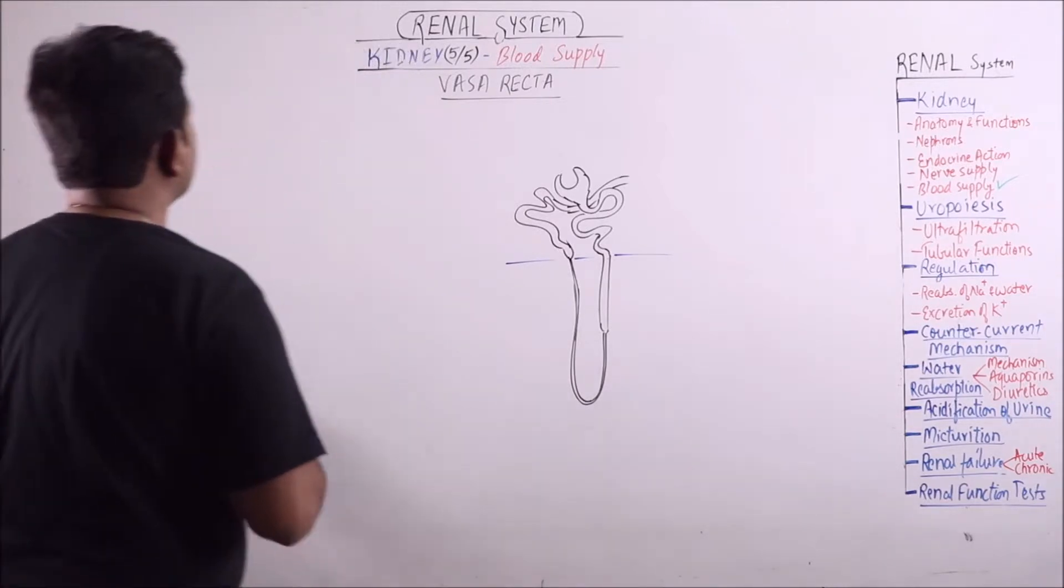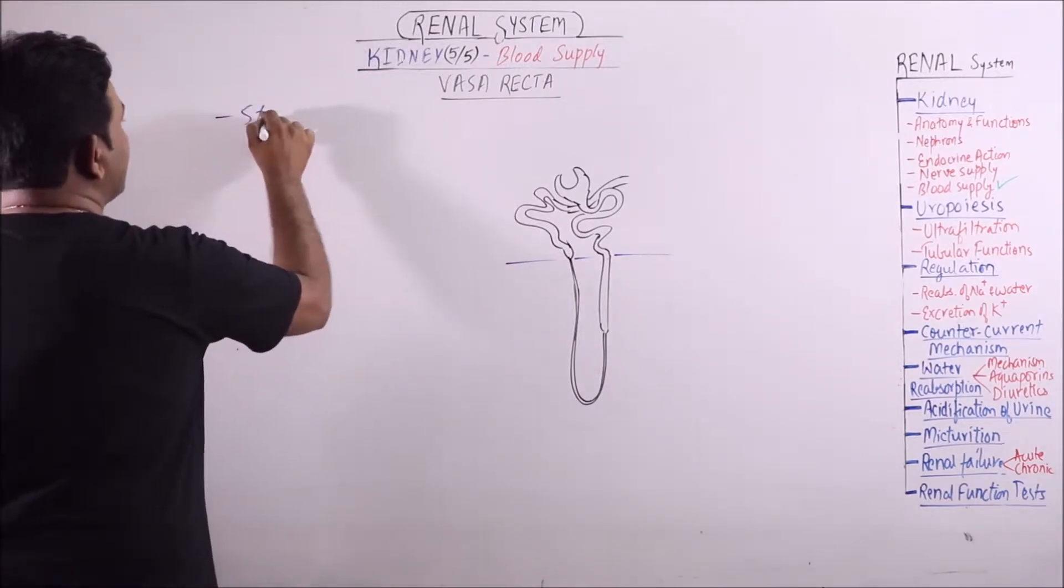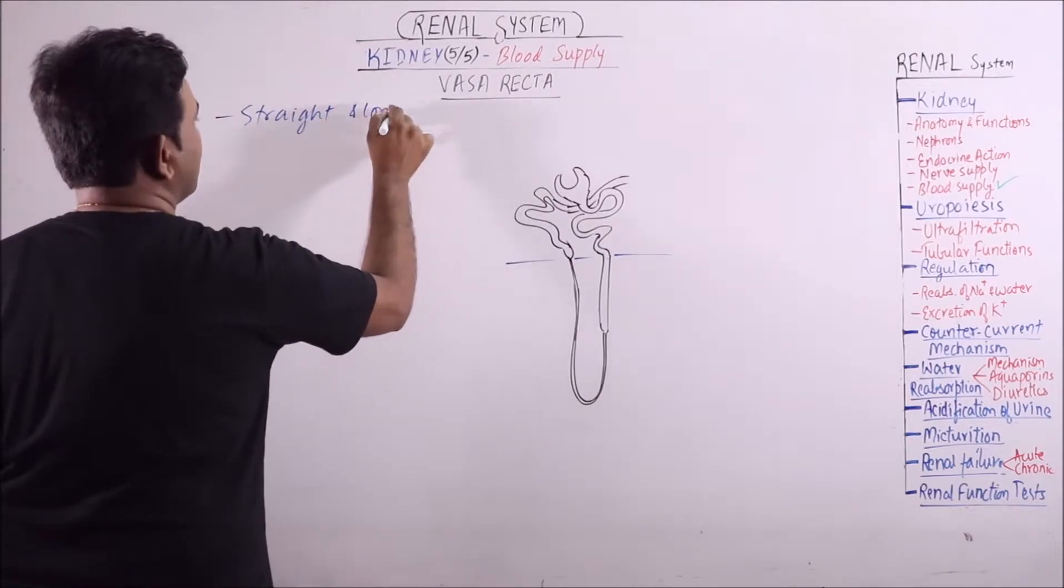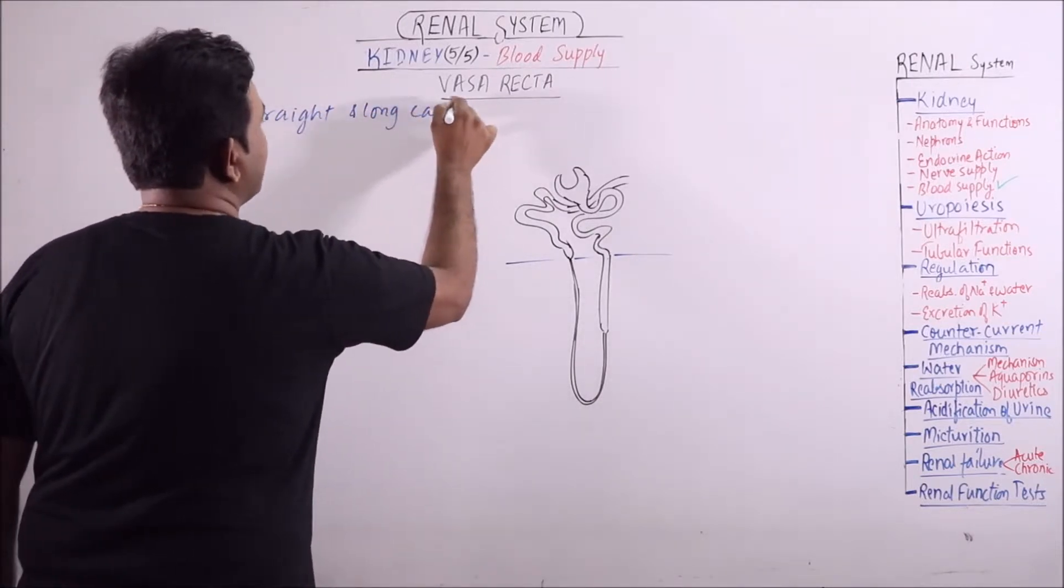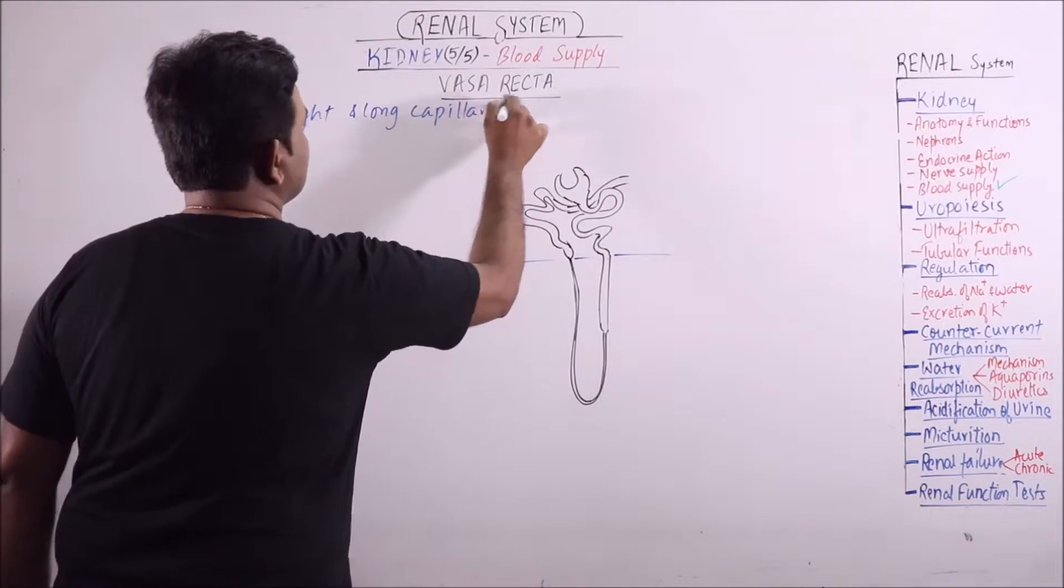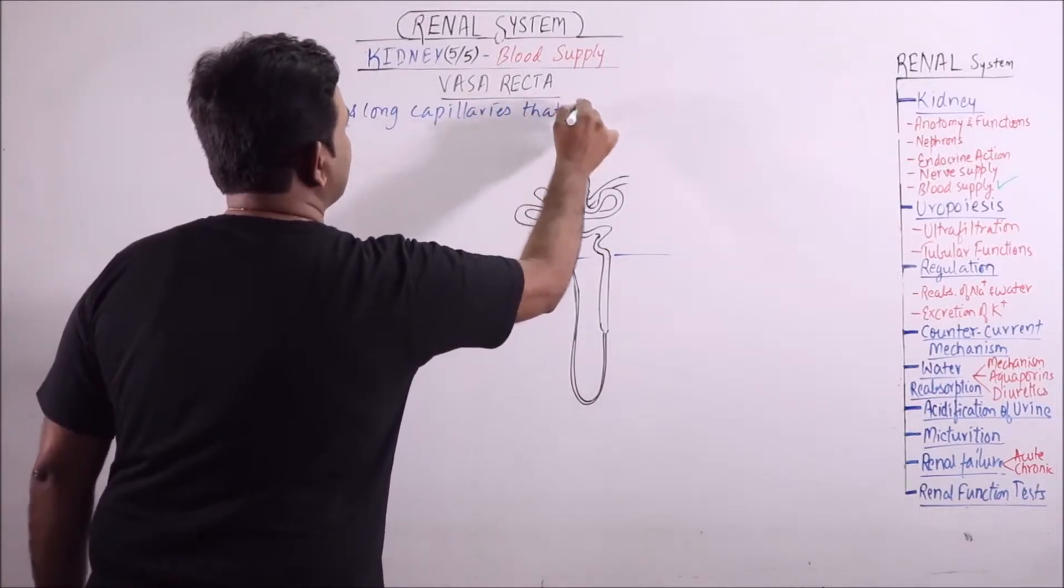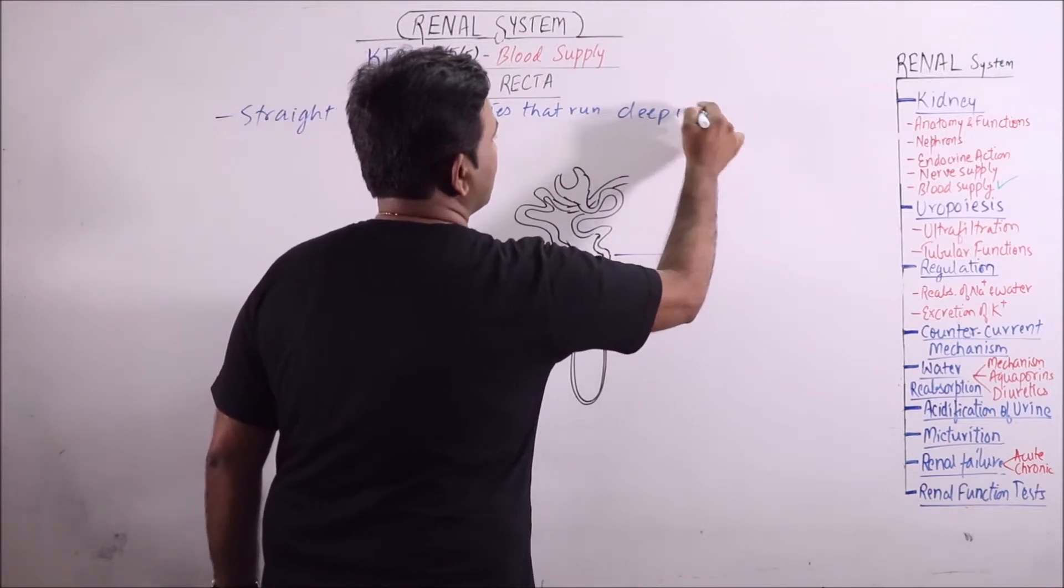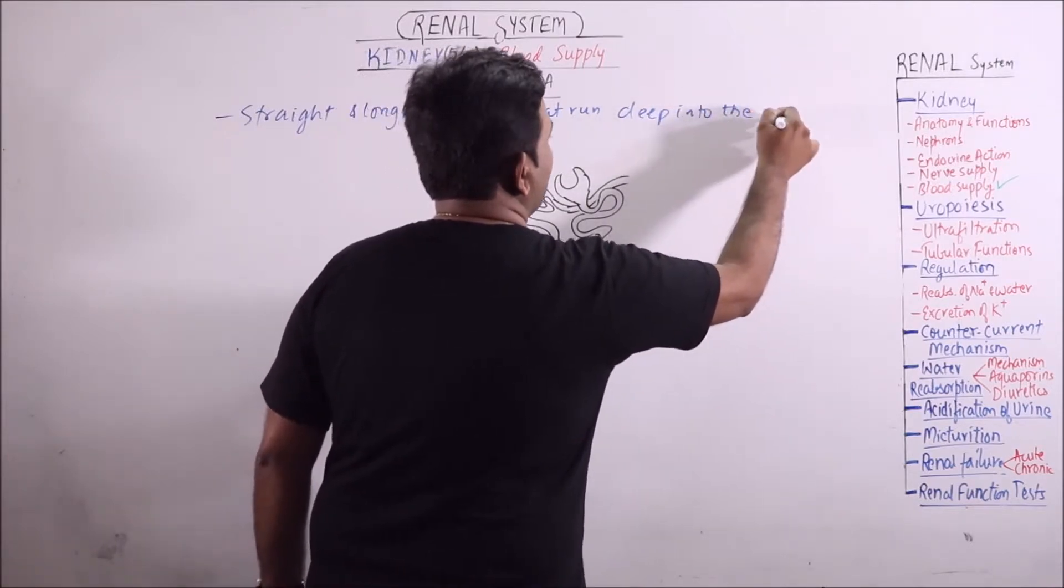What are Vasarecta? Vasarecta are straight and long capillaries that run deep into the medulla.